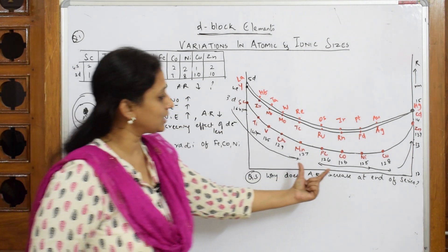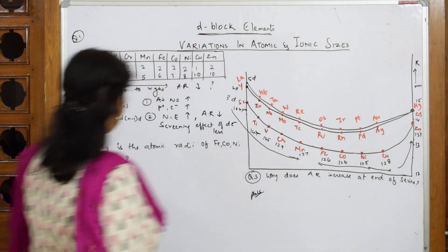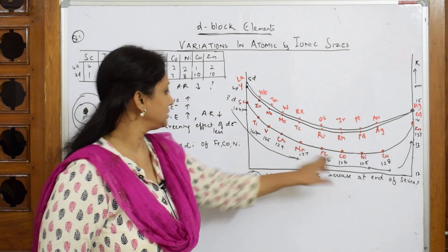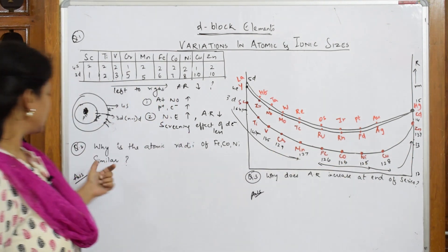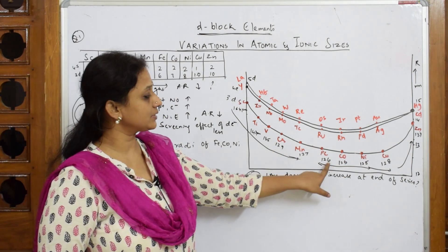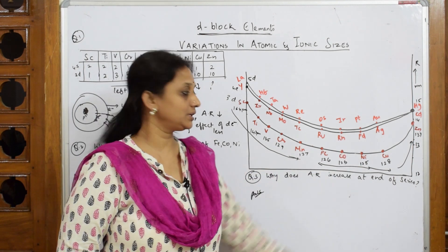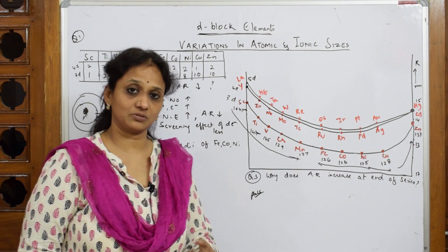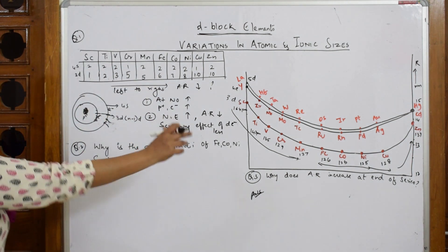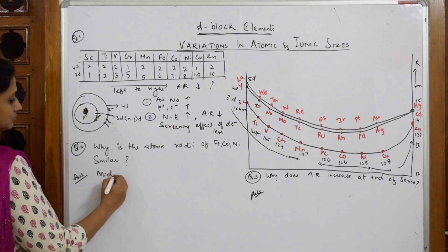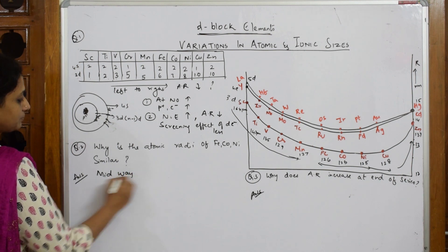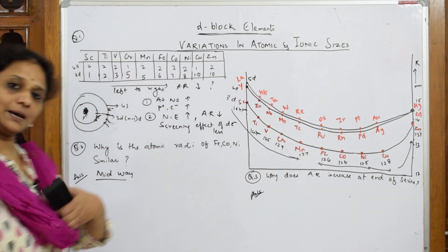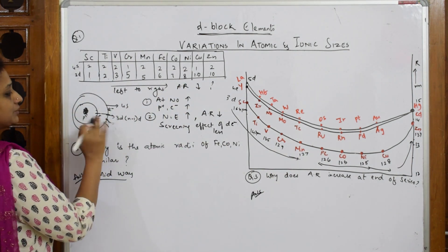Now coming to the middle part of the graph: why are the atomic radii of iron, cobalt, and nickel similar? The values are 126 picometers, 125 picometers, 125 picometers, and about 128 picometers — very close. Let us answer this for the midway section of the series.